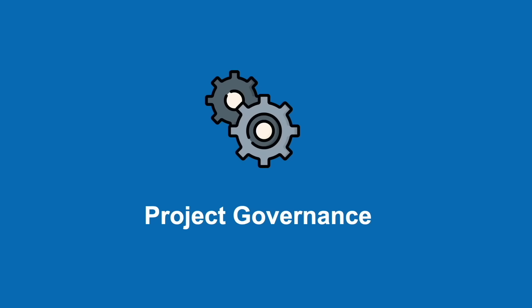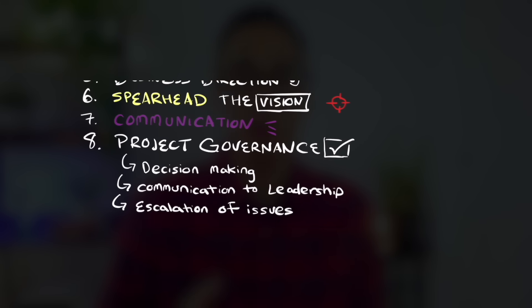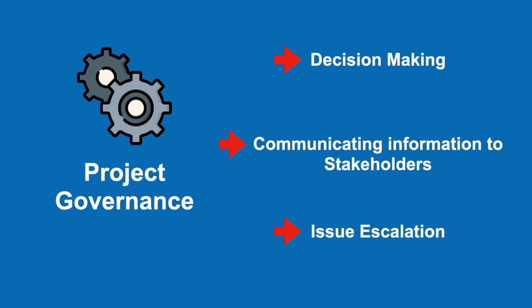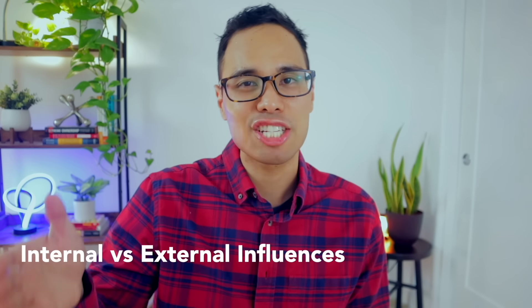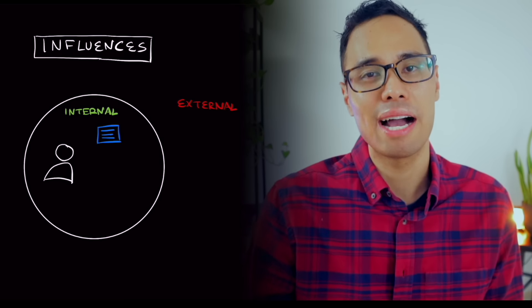The last missing piece is project governance. You need to create a system that defines how project decisions are made and approved, how information is communicated to all stakeholders, how leadership will be informed of your project's progress, and how issues will be escalated for resolution. Because projects operate inside of an organization, you also need to be mindful of any internal and external influences which could either positively or negatively impact your activities.